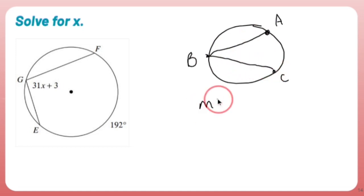The measure of angle ABC is going to be half of the intercepted arc, half of AC.